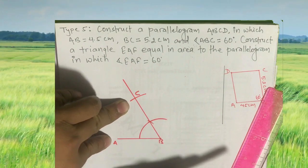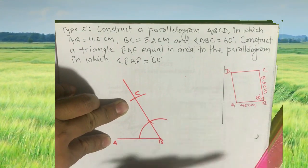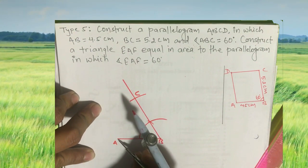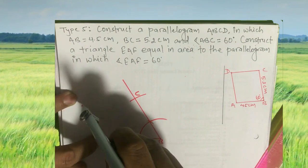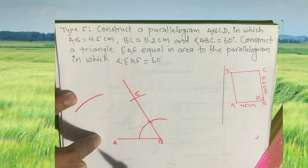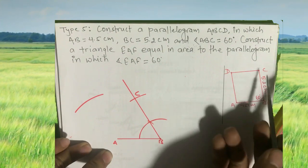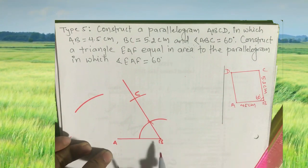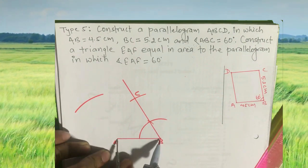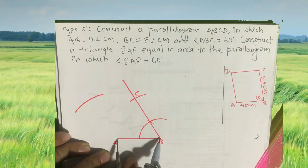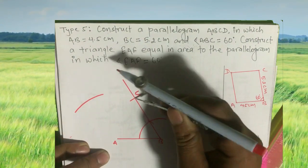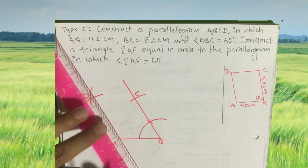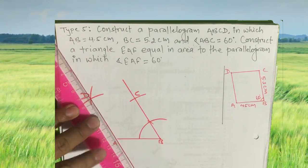In a parallelogram, opposite sides are equal. So if BC is equal to 5.2 centimeter, then AD is also equal to 5.2 centimeter — cut an arc of 5.2 centimeter from A. Also, CD is equal to AB, and AB is equal to 4.5 centimeter, so make an arc of 4.5 centimeter from C. This intersecting point is your point D. Join D with A and C respectively.